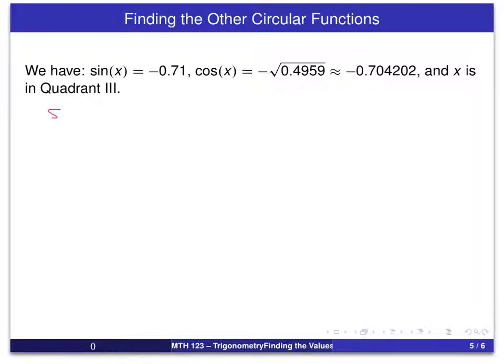Our first one is secant of x, which we know is 1 over the cosine of x. And since we have the value for cosine of x, we can simply substitute that in. That's a negative square root. Put the negative in front of the fraction, and we get our value for secant of x. Just leave the answer in that form.